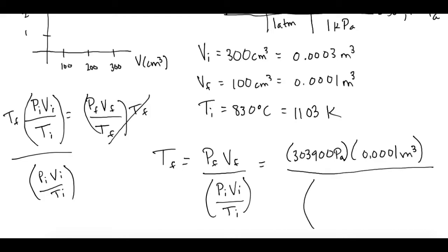Now all of that over 303,900 pascals times the initial volume, which is 0.0003 meters cubed, all over the initial temperature of 1103 Kelvin.